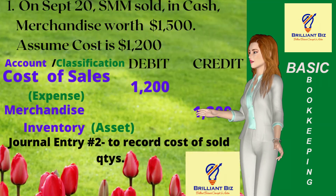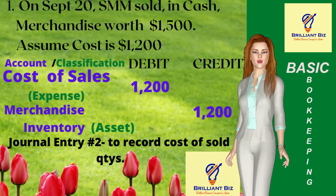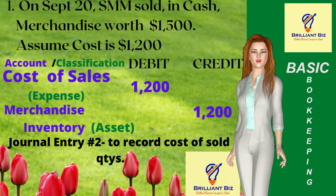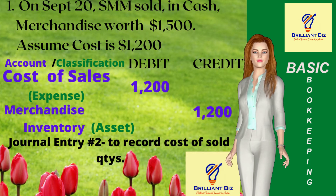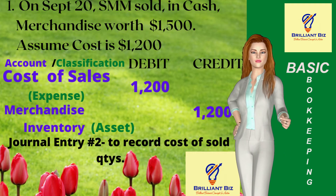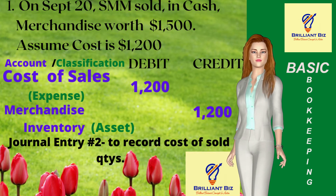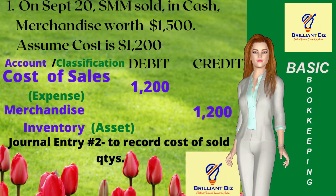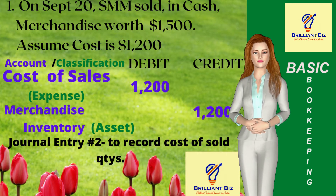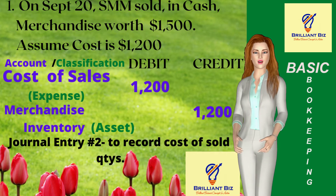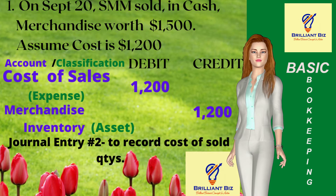The second entry is to record the cost of merchandise sold in cash. Assume that the total cost is $1,200; hence the entry is debit cost of sales for $1,200, which is the purchase price, and credit merchandise inventory for $1,200 to decrease the merchandise inventory.